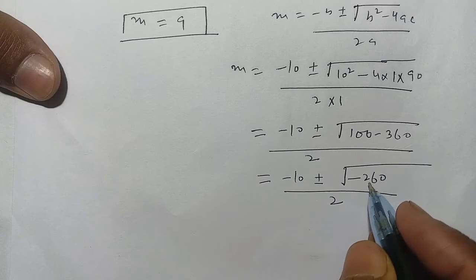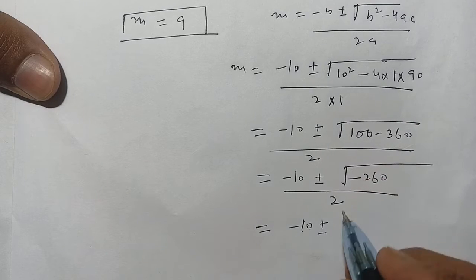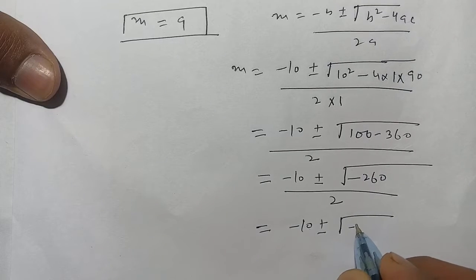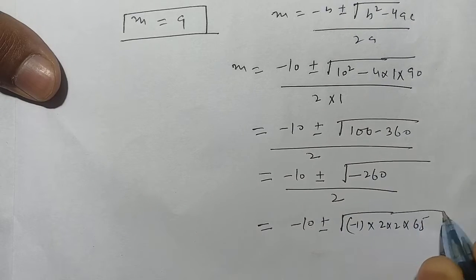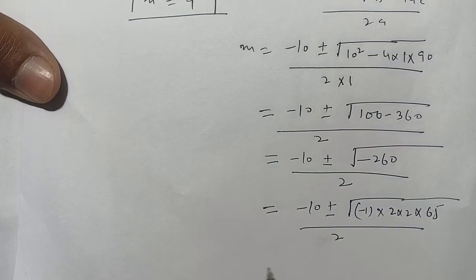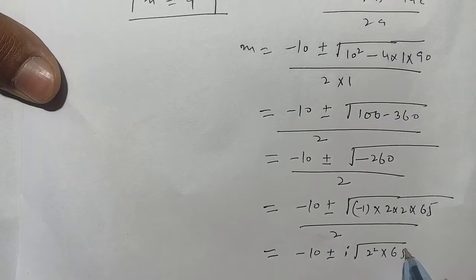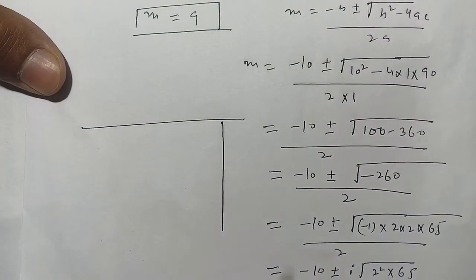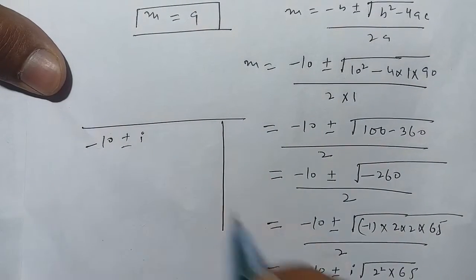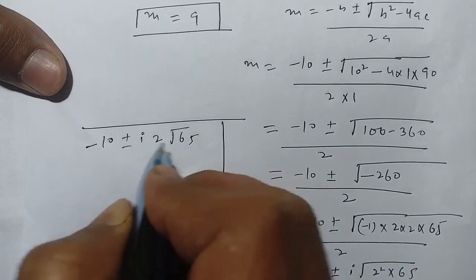We factorize 260 as 2 × 2 × 65. Since √(-1) = i (iota), we write √(-260) = i√(4 × 65) = i × 2√65. So we get (-10 ± 2i√65) / 2.